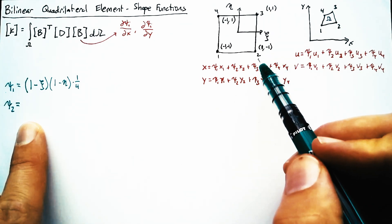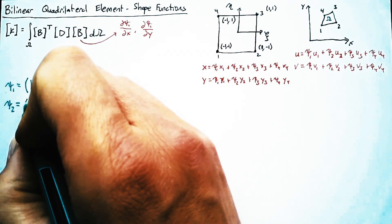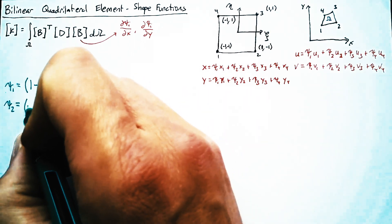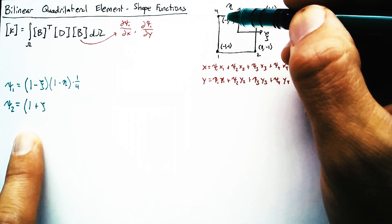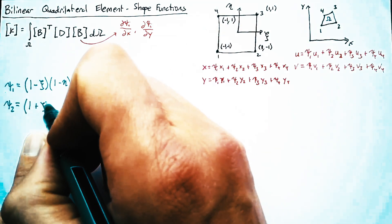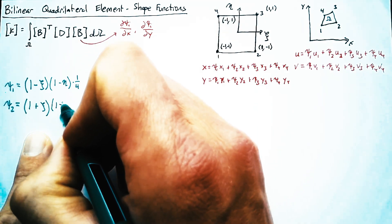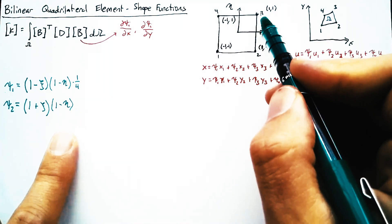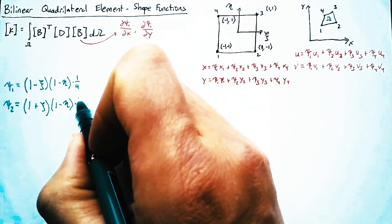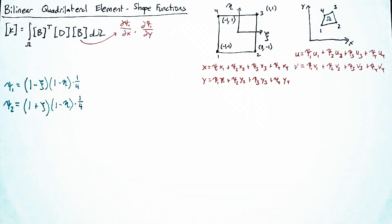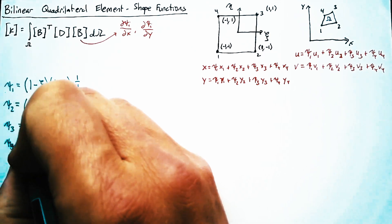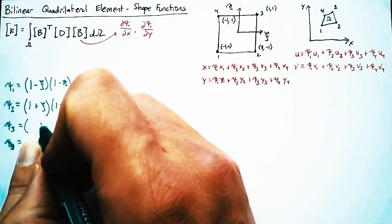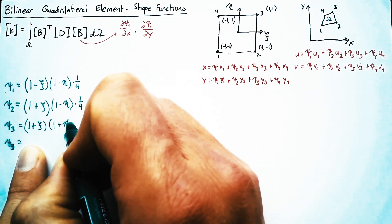And we can do something similar for the other three nodes. So in this case, we want to change the value of xi. So this is going to be 1 plus xi, so that it's 0 on 1 and 4. And then we're going to keep the 1 minus eta to make sure that it's 0 at 3. And so that is still multiplied by 1 fourth. And then psi 3 and psi 4 look really similar.